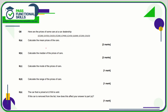Question number 6a — calculate the mean price of the car. We add up all of these values and divide by 9. The total price of all the cars combined comes to £39,600. Dividing that by 9, you get a mean price of £4,400.